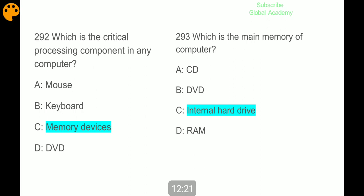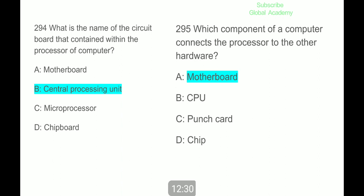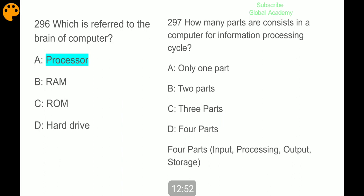Which is the critical processing component in any computer? Memory devices. Which is the main memory computer? Internal hard drive. What is the name of the circuit board that contains the processor of computer? CPU. Which component of a computer connects the processor to the other hardware? Motherboard. Which is referred to the brand of computer processor? How many parts consist in a computer for information processing cycle? Four parts: input, processing, output, and storage.